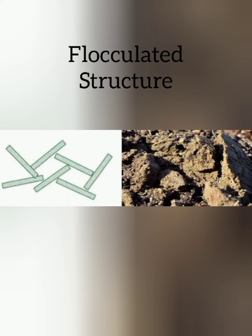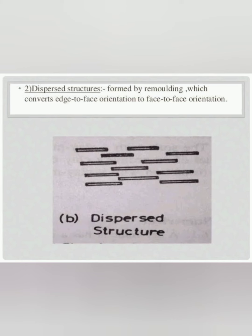Flocculated structure. From the figure we observe the arrangement as edge-to-face orientation, and there is a net attraction between the particles. It is stable in nature and has more strength. Due to remolding, the flocculated structure converts into dispersed structure.